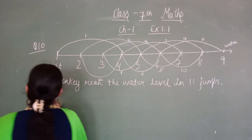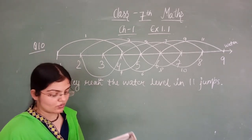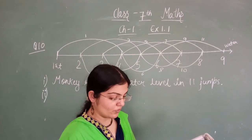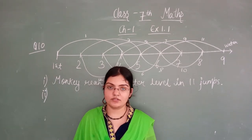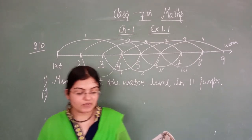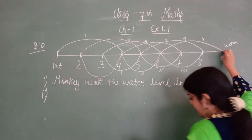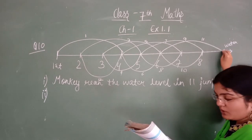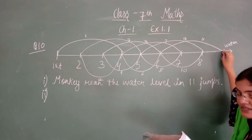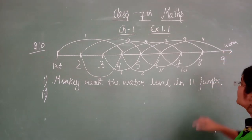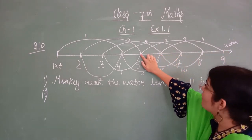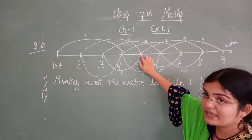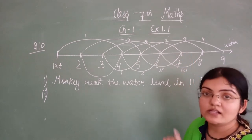Now the second part: the question says after drinking water the monkey wants to go back. For this he jumps 4 steps up and then 2 steps down in every move. So in how many jumps will he reach the top step? After drinking water, the monkey is at the ninth step. He jumps 4 steps up: 1, 2, 3, 4 — so the monkey goes from the 9th to the 5th step. Then 2 steps down means the 7th step.